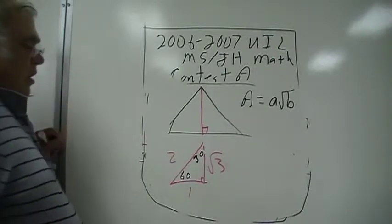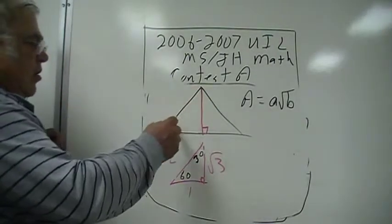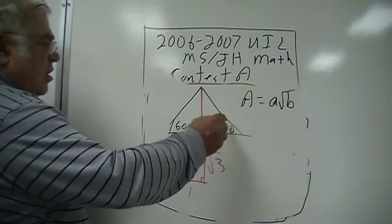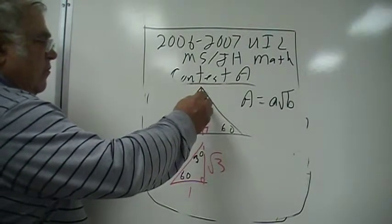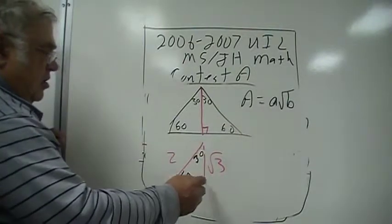If it's an equilateral triangle, these angles here are 60s, and this one here then would be 30, and this would be 30, 60, 90.